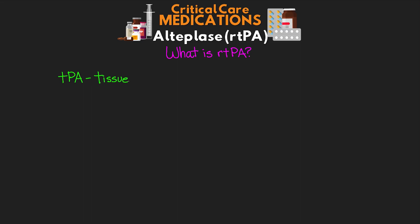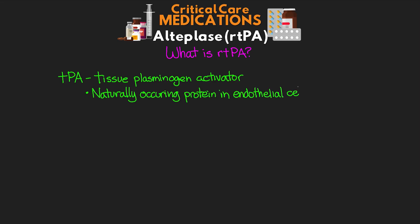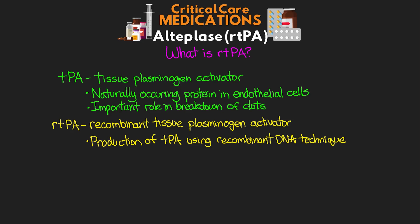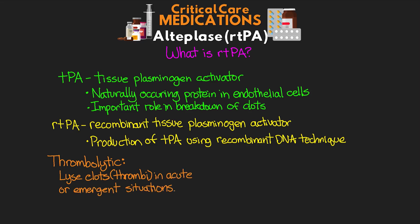TPA stands for tissue plasminogen activator — a naturally occurring protein in the endothelial cells of our blood vessels that plays an important role in the breakdown of clots. rTPA stands for recombinant tissue plasminogen activator, meaning it is produced using recombinant DNA technique — our way of artificially creating TPA. rTPA is classified as a thrombolytic, meaning its job is to lyse clots in acute or emergent situations. The medication goes by the name alteplase, with trade names Activase or Cathflo Activase.